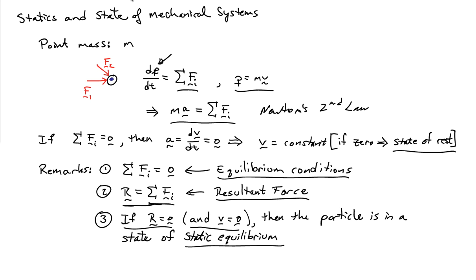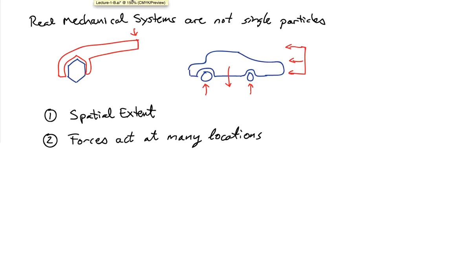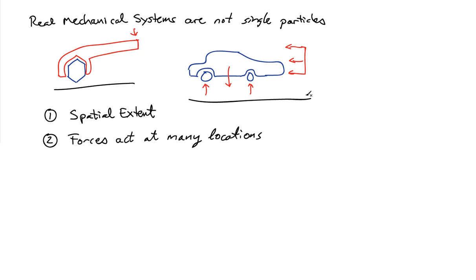Real mechanical systems are not simply single particles. For example, we could have a wrench acting on a bolt, or a vehicle driving down the road. These are systems composed of many material particles with forces acting at a number of locations. For the car, there are forces on the tires, the weight acting at its center of gravity, and wind resistance acting on the car as it moves.